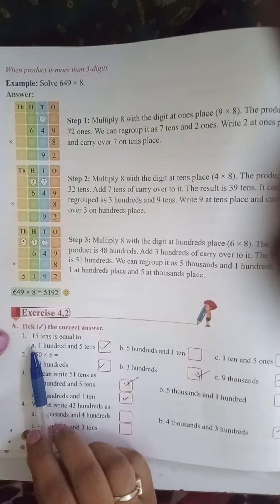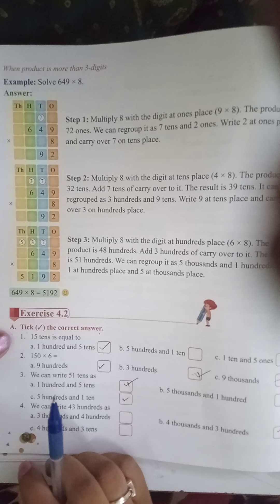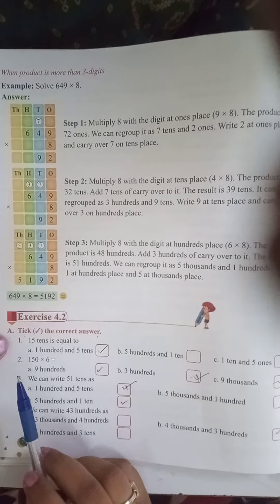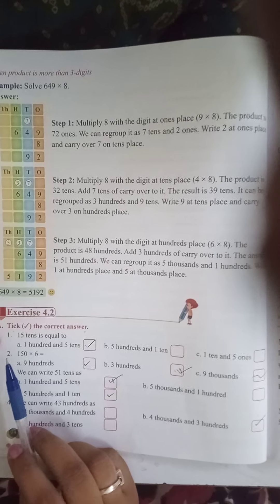First, you can understand what is meant by tens and ones. One tens means 10. Two tens means 20. Three tens means 30.